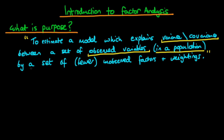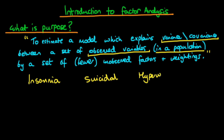It's probably best spoken about in terms of an example. The idea is that we might have some data on a particular set of observed characteristics for people. We might have data from samples of whether individuals experience insomnia, whether they have suicidal thoughts, whether they hyperventilate, and also whether that individual typically feels nauseous most of the time. This data might be, for example, from individuals who are admitted to psychiatric care.